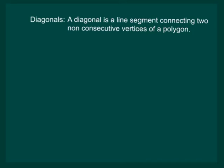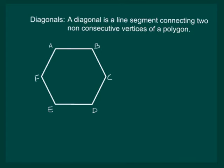Let us now define diagonals. A diagonal is a line segment connecting two non-consecutive vertices of a polygon. Let us consider this hexagon. We start from point A. Then the consecutive vertices of vertex A are B and F.